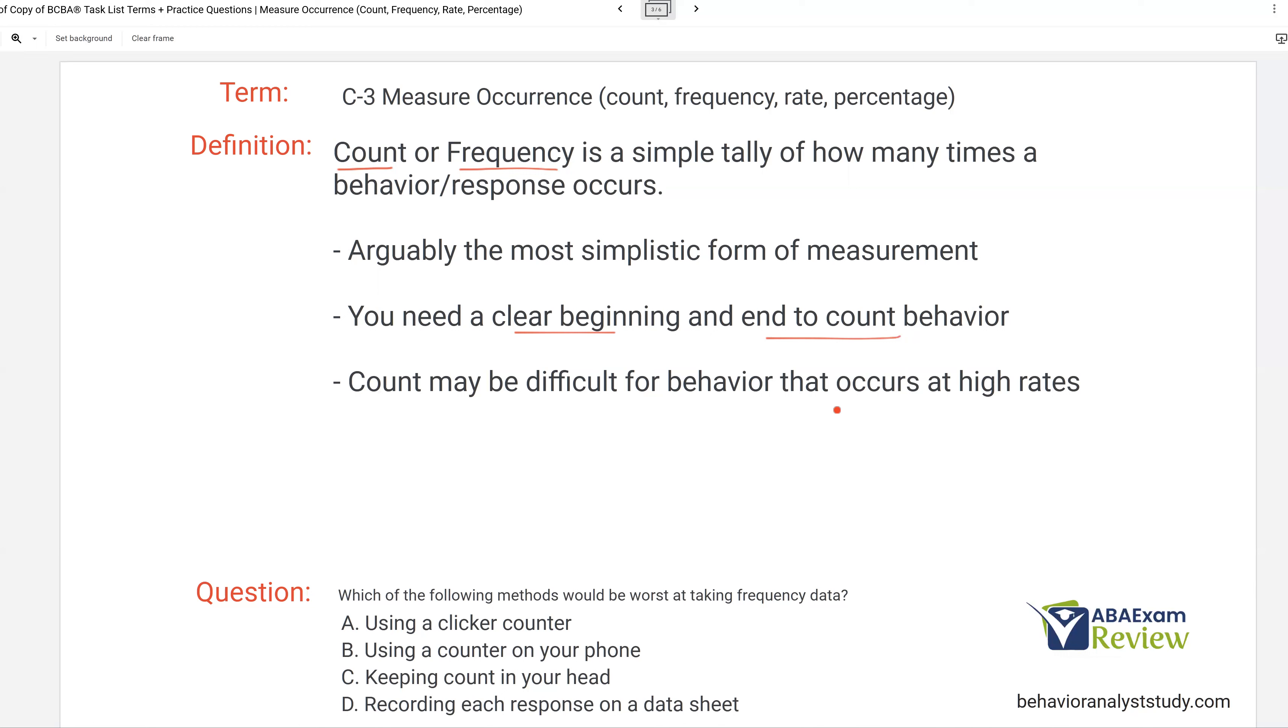And then behavior that occurs at high rates. So if we've got some sort of self-stimulatory behavior occurring hundreds of times per minute, it's going to be really difficult to count that many. So we need to be smart, even though count and frequency is simple. We've got to be smart about when exactly we're using it.